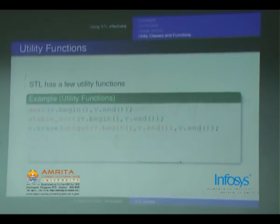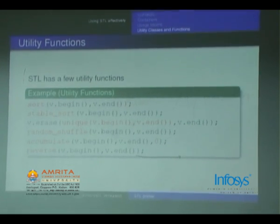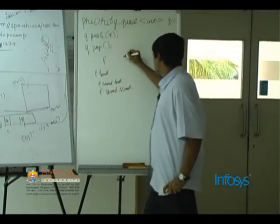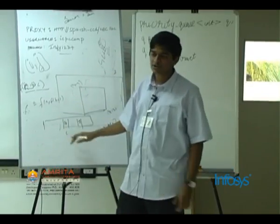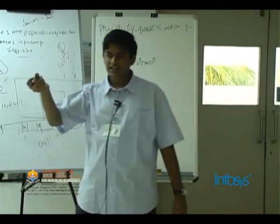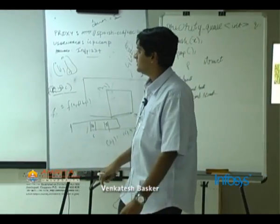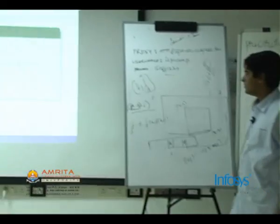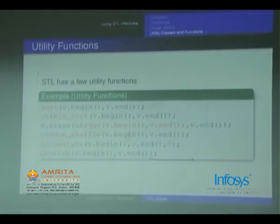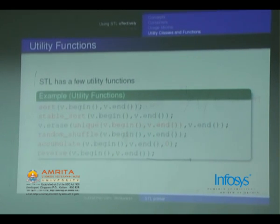`sort(v.begin(), v.end())`. `stable_sort` will maintain the stable property — it preserves the order in which equal elements occurred in the original array. So if you have a structure where elements appear in some order in the initial array, that relative order will be preserved in the final array for equal keys. `v.erase(unique(v.begin(), v.end()))` will erase all duplicate elements. So if the vector initially has 1, 3, 3, 4, 4, after that statement it will only have 1, 3, 4.